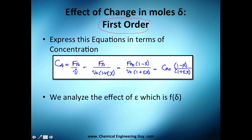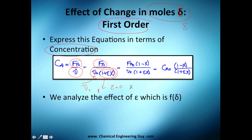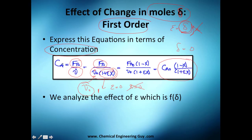For first order, let's analyze the effect of changing moles using epsilon. We express the equation in terms of concentration by substituting the new volumetric flow rate, which depends on the initial volumetric flow rate and the change factor. This change factor equals one when epsilon equals zero or when conversion x equals zero. Epsilon is defined as the change in moles times the mole fraction at the beginning, so if sigma (the stoichiometric change) is zero, the volumetric flow rate remains constant. This gives us the final expression for concentration of A at any conversion.